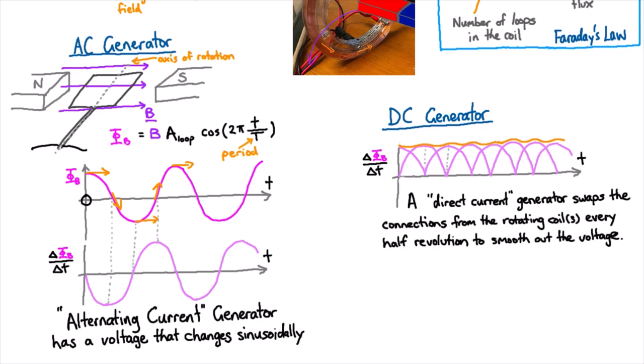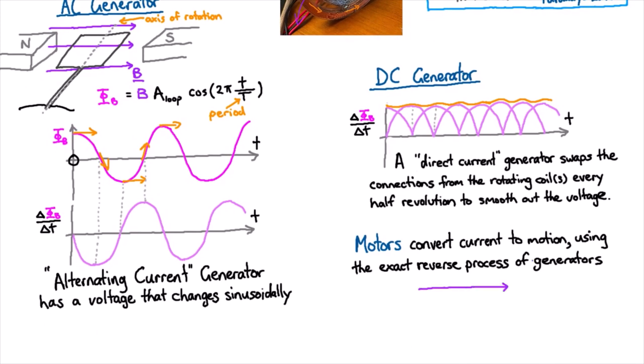DC and AC motors are just the exact reverse process. If we look at that coil in the magnetic field, instead of using force to turn the coil to try and make electricity, I'm going to apply electricity to try and cause a force.